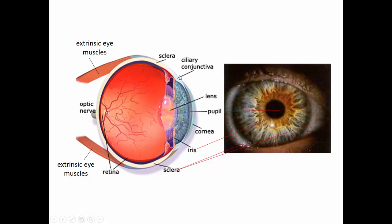The ciliary muscles hold the lens. The lens has the consistency of hardened jelly, so it has some flexibility. When the ciliary muscles contract, it causes the lens to bend slightly. The lens's job is to allow light to go through it and bend the light, hopefully bending it in a manner such that we can focus the image clearly.